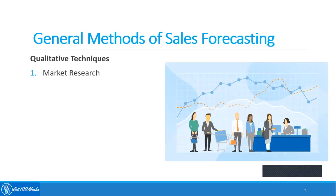Historical analogy: in trying to forecast demand for a new product, an ideal situation would be where an existing product or a generic product could be used as a model. There are many ways to classify such analogies — for example, complementary products, substitute or competitive products, and products as a function of income.